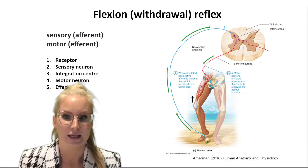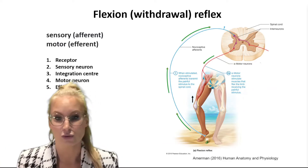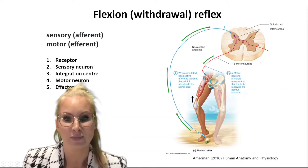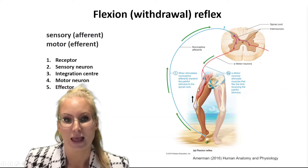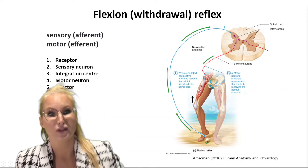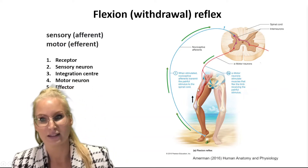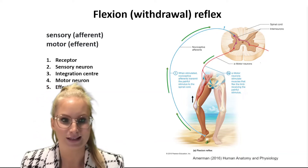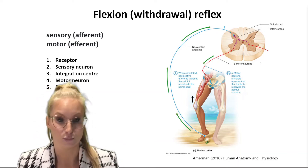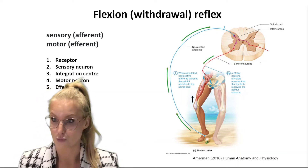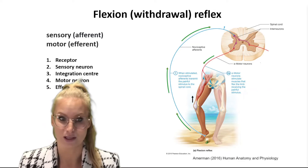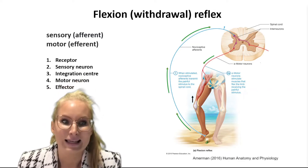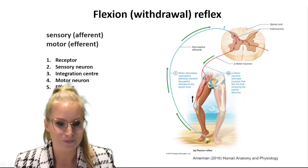In this case, the effector is the muscle of your leg — as you can see here — and it's going to make you lift up your leg and flex it. This causes flexion, as the withdrawal reflex name implies, making you lift your leg and get away from that sharp object.